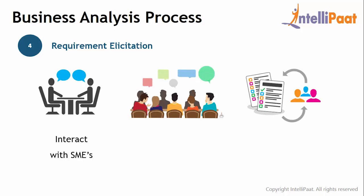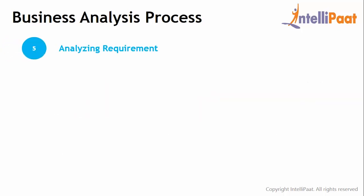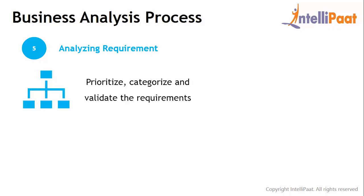In one-on-one interviews, the business analyst interacts with subject matter experts to understand the whole concept of the project. Focus groups are like interviews where a group of people is gathered in a room to discuss their requirements together, helping the BA find a better solution. Another useful technique is sending out a questionnaire or survey to customers or stakeholders via email, Google Forms, or other tools. Other popular elicitation techniques include observation or job shadowing. Step 5 is analyzing requirements — once the BA has gathered information, he must prioritize, categorize, and validate those requirements.